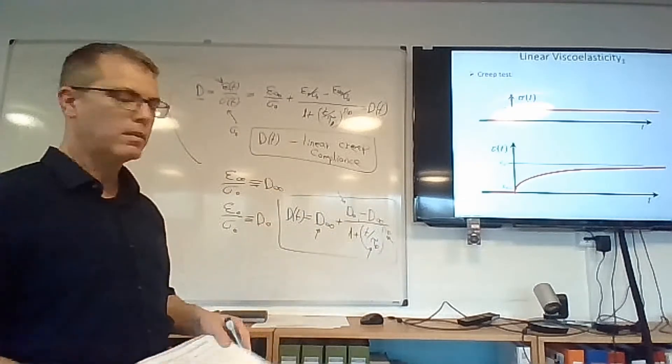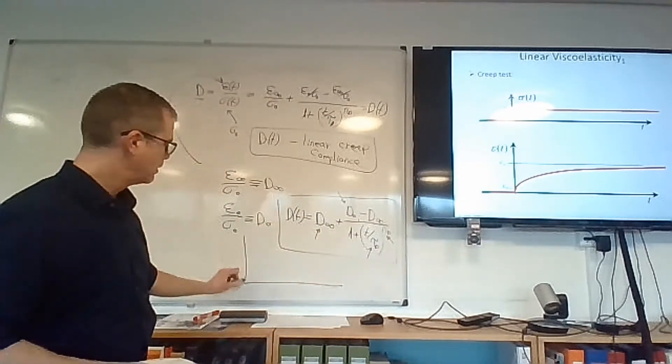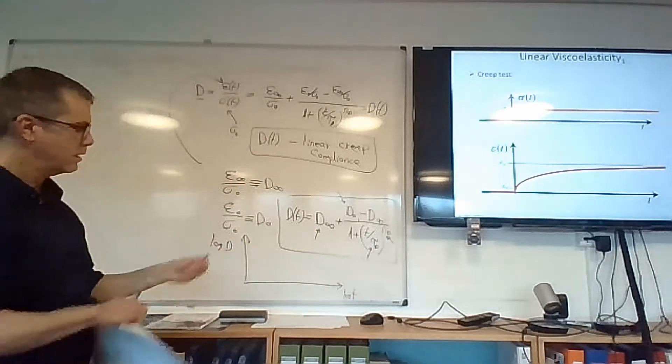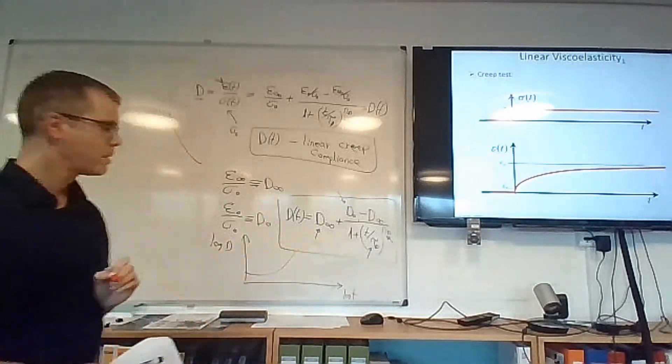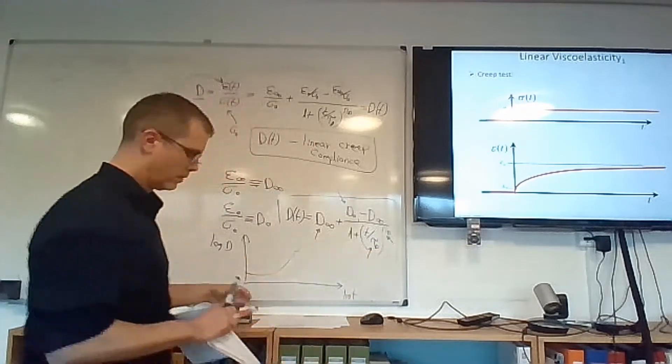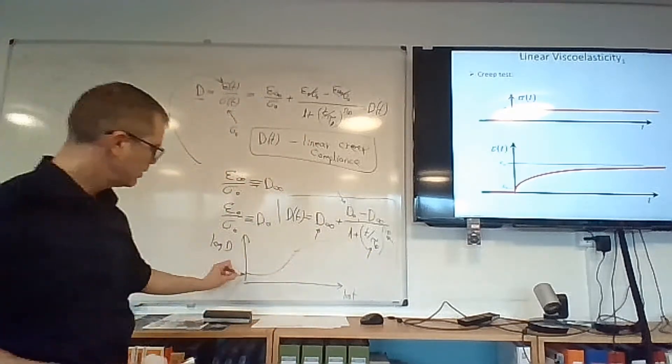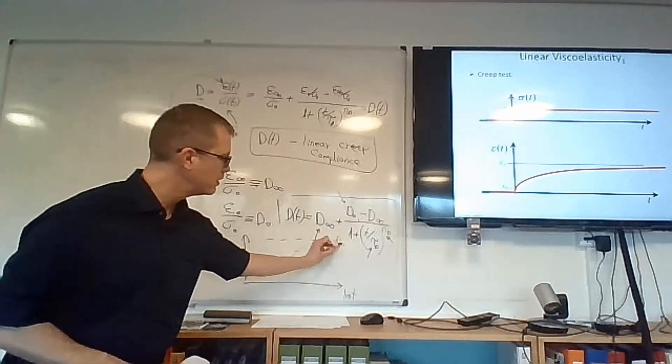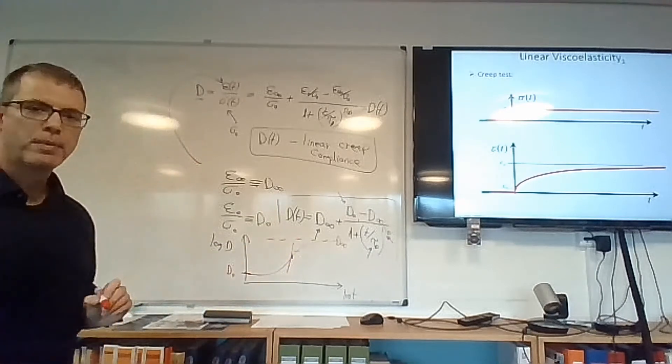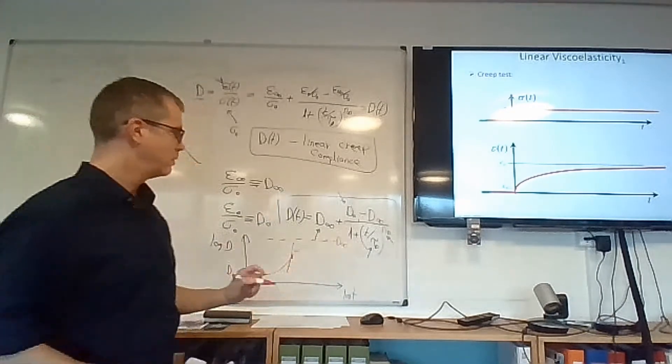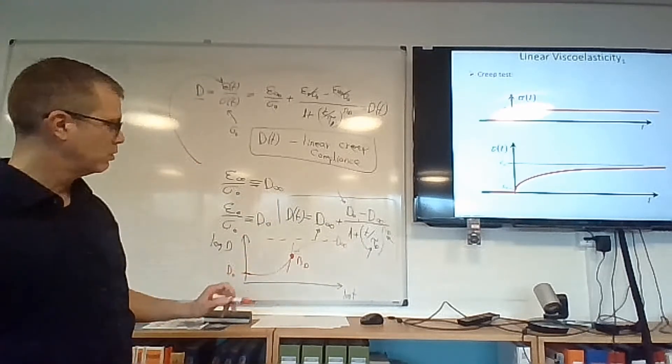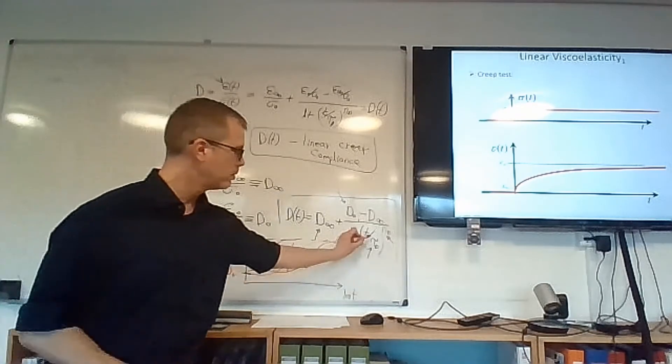If you were to plot this in a double log scale, meaning we place log of d and then log of t on the two axes, you will see that the outcome is a sigmoidal shape. Where the value here is d infinity, the value here is d zero. And how fast does this sigmoidal shape changes between d zero and d infinity is determined by the power n d. And the location of this inflection point in this skewed space, if this is happening here or here, this is controlled by Tau d.